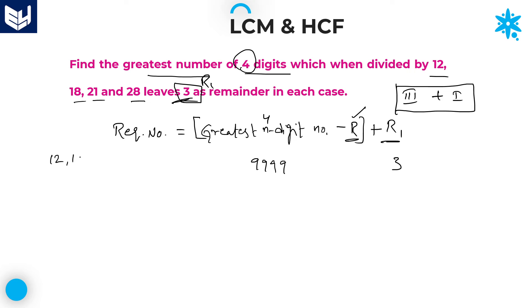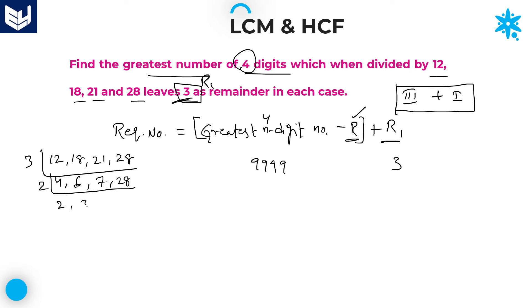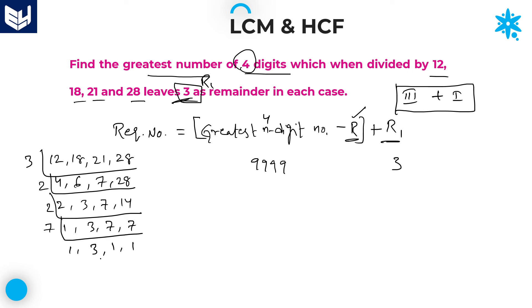Calculate the LCM of 12, 18, 21, and 28. Dividing by 3: 4, 6, 7, 28. Divide by 2: 2, 3, 7, 14. Divide by 2 again: 1, 3, 7, 7. Divide by 7: 1, 3, 1, 1. LCM = 2² × 3² × 7 = 4 × 9 × 7 = 36 × 7 = 252.